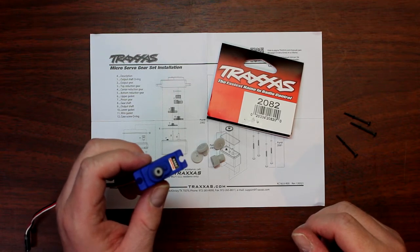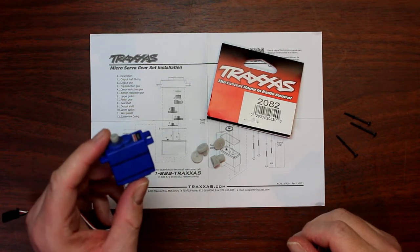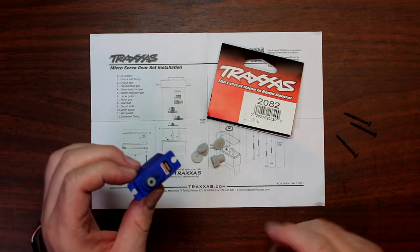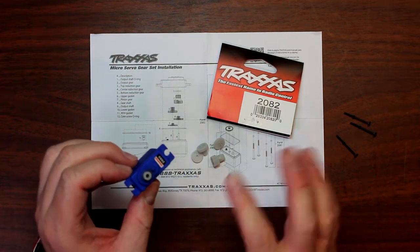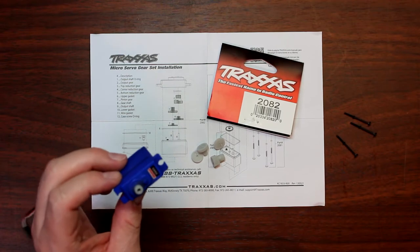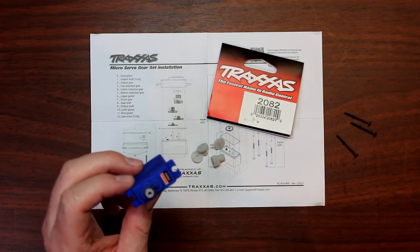Hey, welcome back to another video by DJS BRC. Today I want to show you how to change the gears in the Traxxas servo. This is the 2082 gears with the 2080.